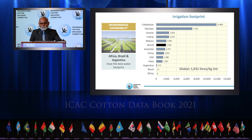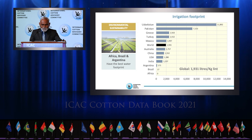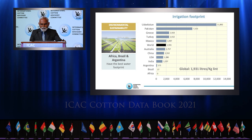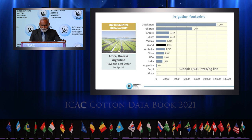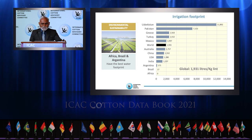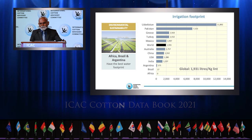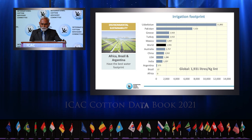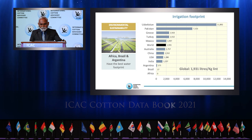Irrigation water is a critical input in agriculture. Cotton in Africa and Brazil is rain-fed. 85% of cotton area in Argentina is rain-fed, and 65% of the area in India and the United States also is rain-fed. Therefore, it is not surprising that these nations have the best water footprint. It is important to mention that a greater water footprint in some countries, such as Pakistan and Uzbekistan, is mainly because of the low seasonal rainfall in the cotton-growing regions, where cotton cannot be grown economically without irrigation.